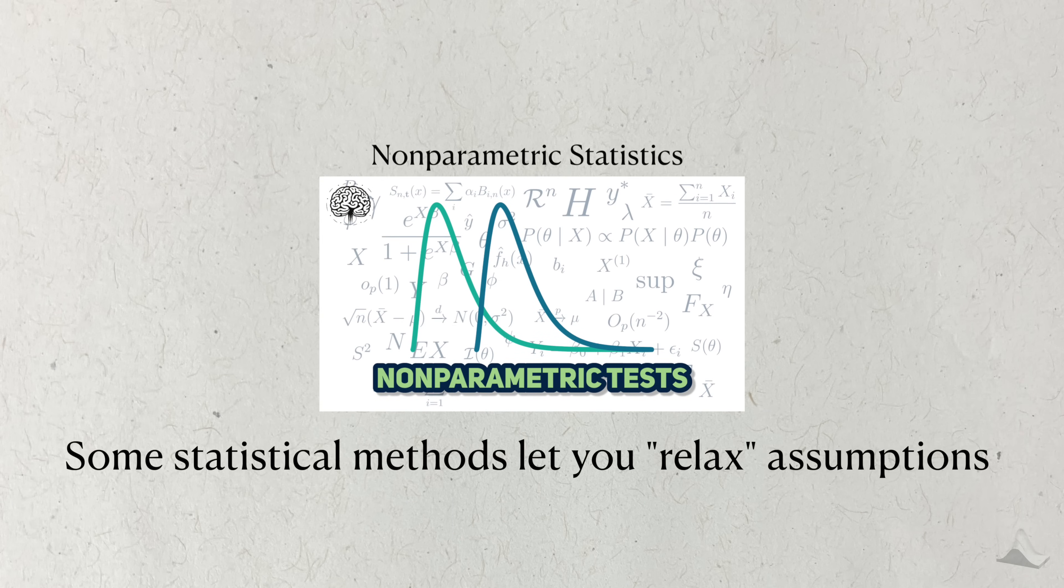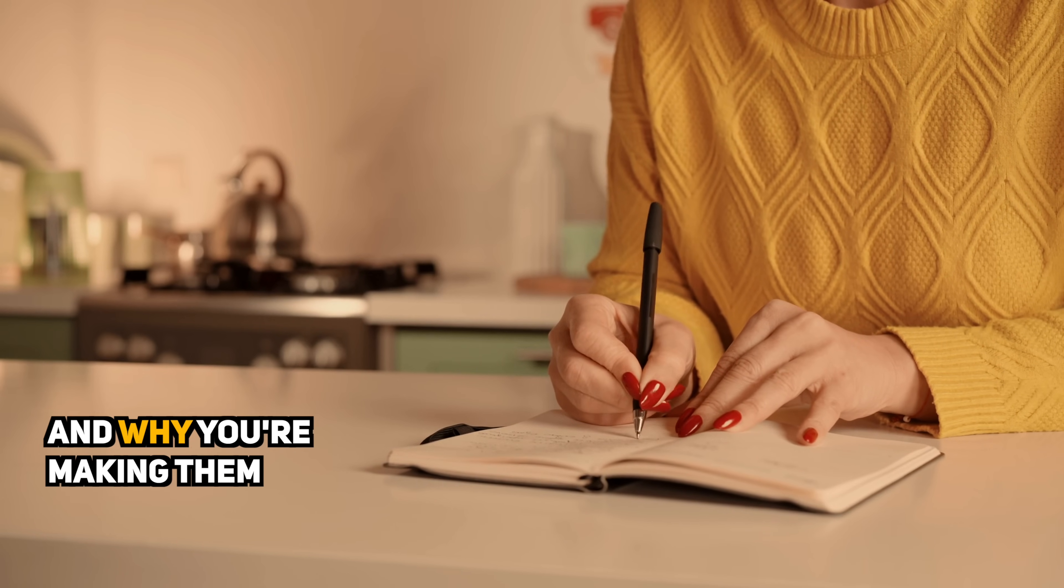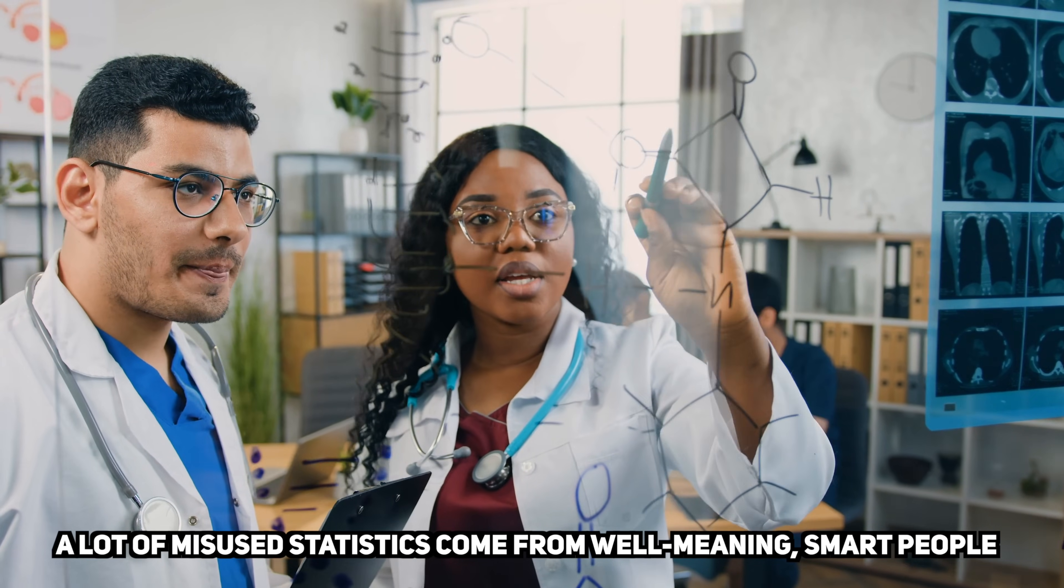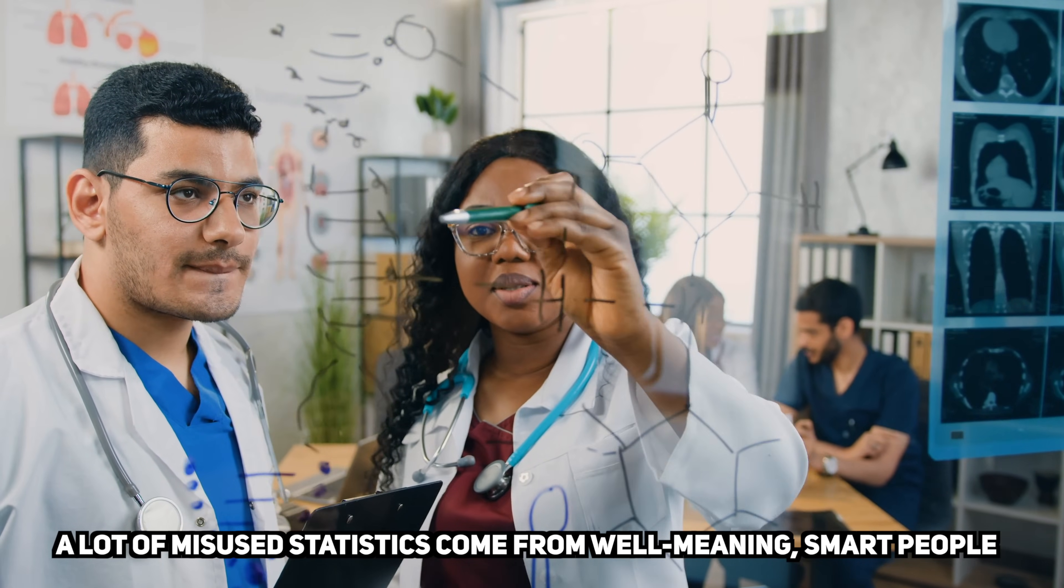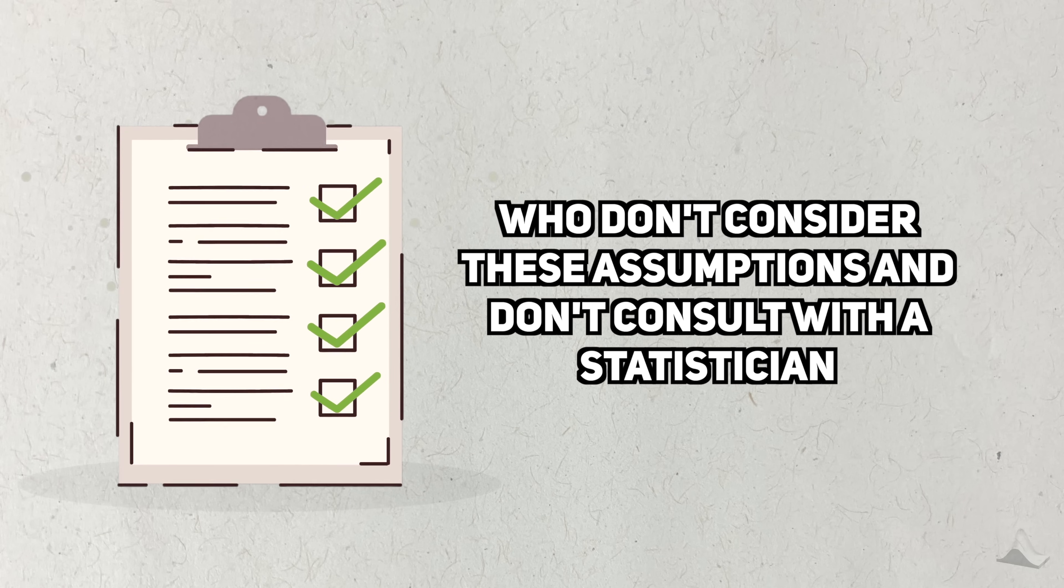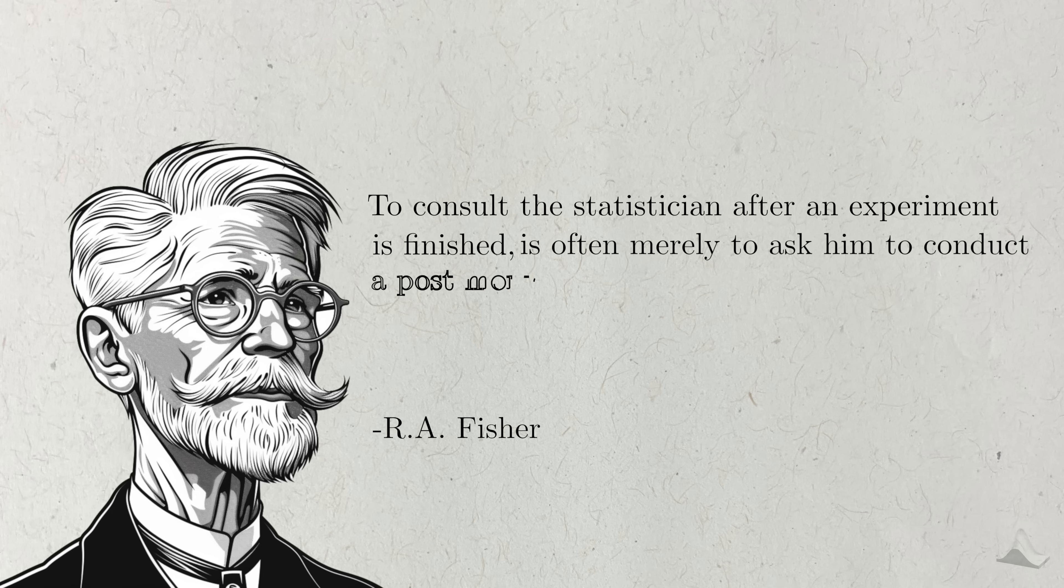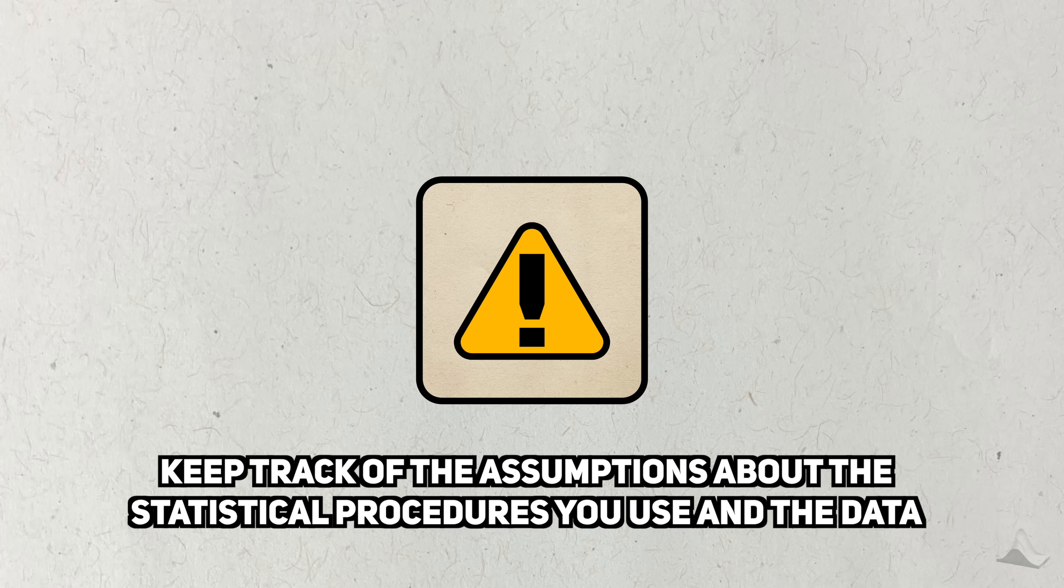The best thing you can do is to know what assumptions you're making and know why you need to make them in the first place. A lot of misused statistics I see come from well-meaning, smart people, including MDs and PhDs, who don't know what these assumptions are and don't bother to consult with a statistician before collecting their data. Then they're stuck with an expensive data set that doesn't tell them anything. There's an RA Fisher quote that says, to consult the statistician after an experiment is finished is often merely to ask him to conduct a post-mortem examination. He can perhaps say what the experiment died of. The moral of this last tip is to keep track of all the assumptions you use for a statistical model and the data you collect.